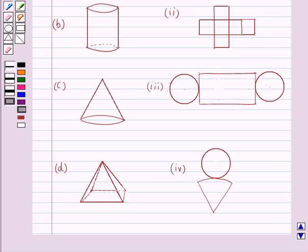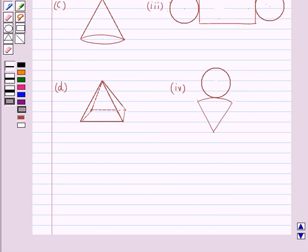Now we know that a net is a skeleton outline of a solid that can be folded to make the solid. The same solid can have several types of nets. Now we know that three dimensional shapes can be visualized on a two dimensional surface by making nets.